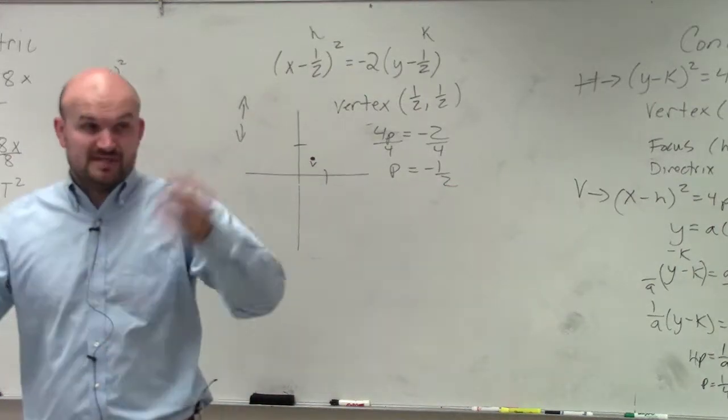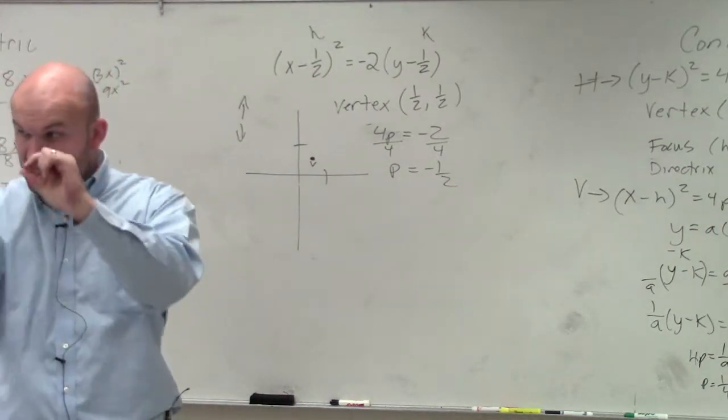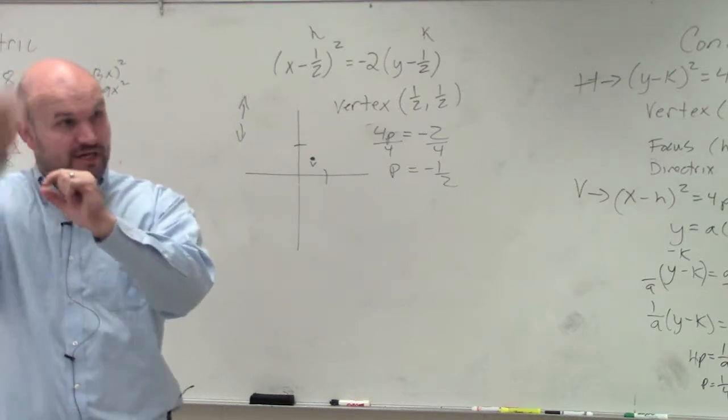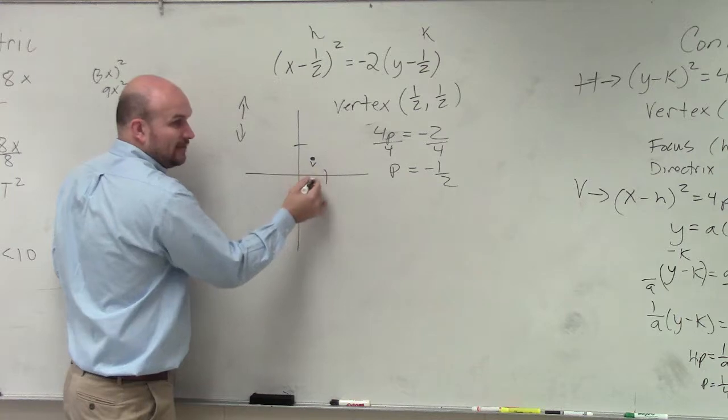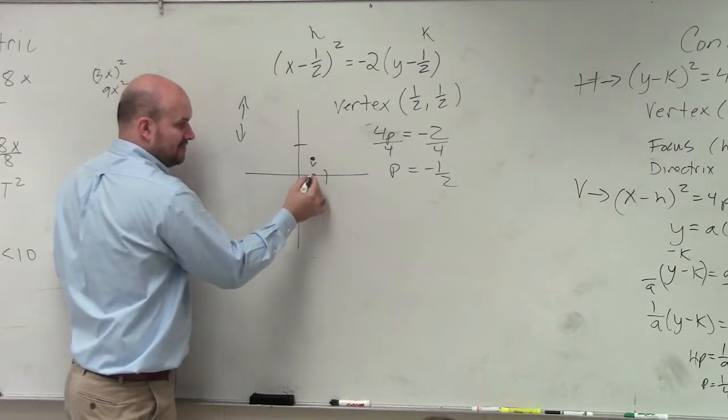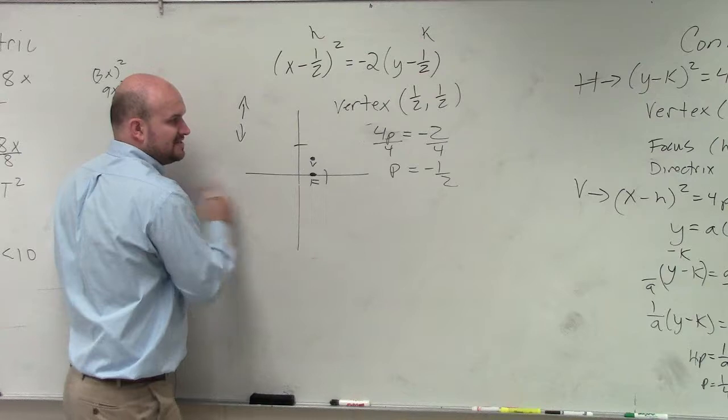So if my graph opens up or down, p is the distance from the vertex to the focus. If it's negative, should I go down or should I go up? Down. So my focus is going to be down 1 half. I already went up 1 half, so it's at 1 half 0.